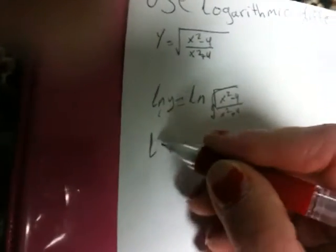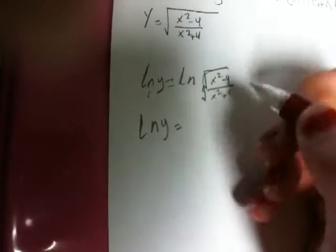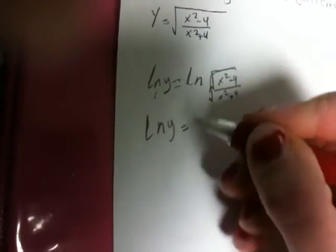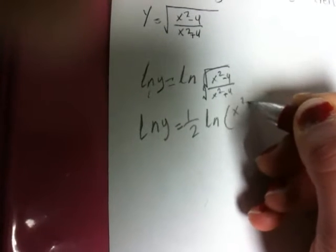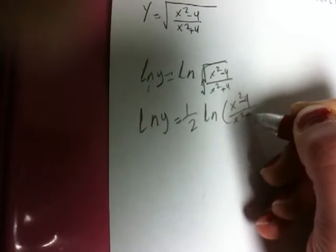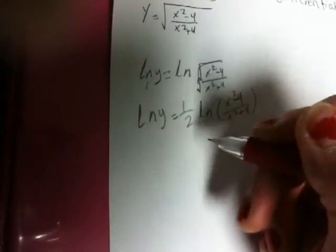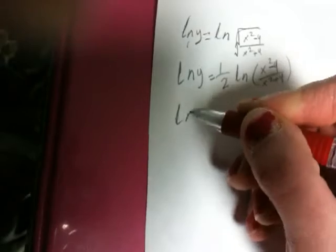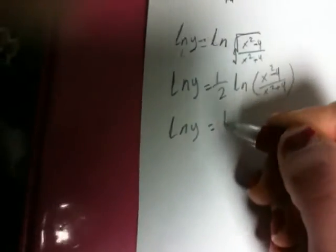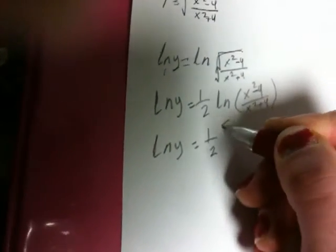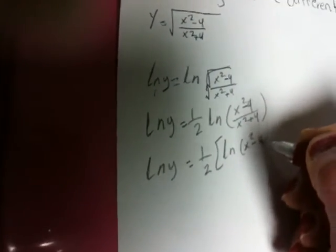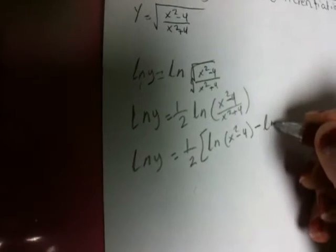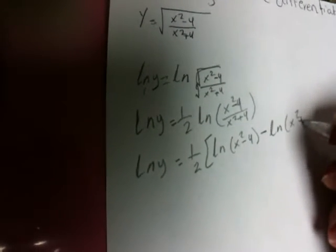We continue with ln y. We make the square root into one-half, so ln y equals one-half times ln of x squared minus 4 over x squared plus 4. Then we separate the fraction: ln y equals one-half times ln(x squared minus 4) minus ln(x squared plus 4).